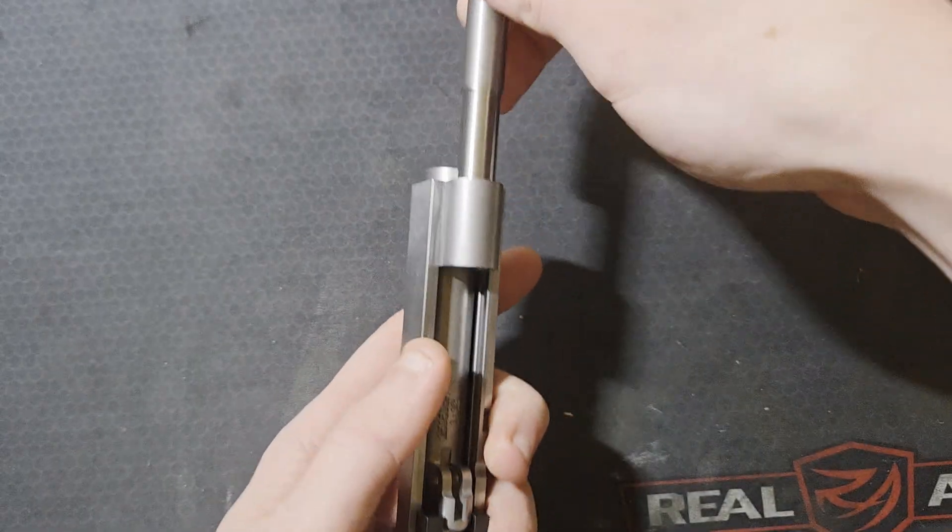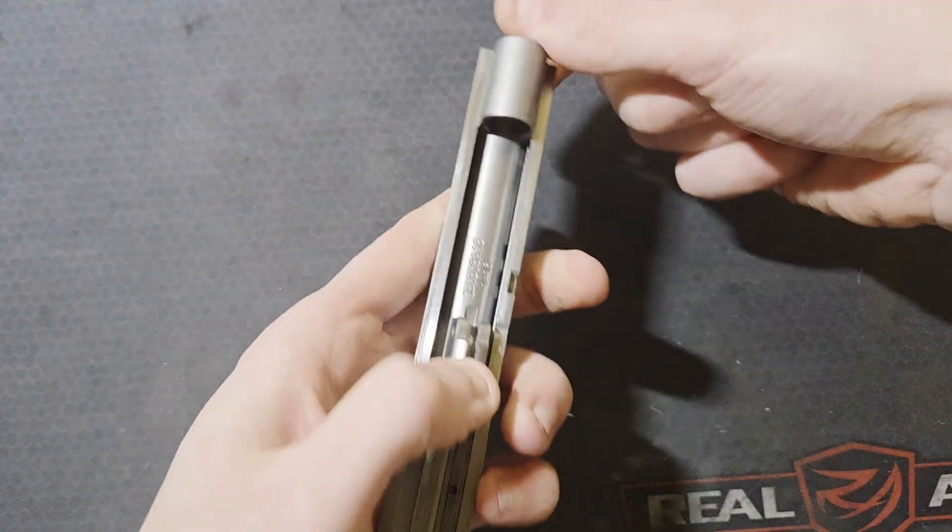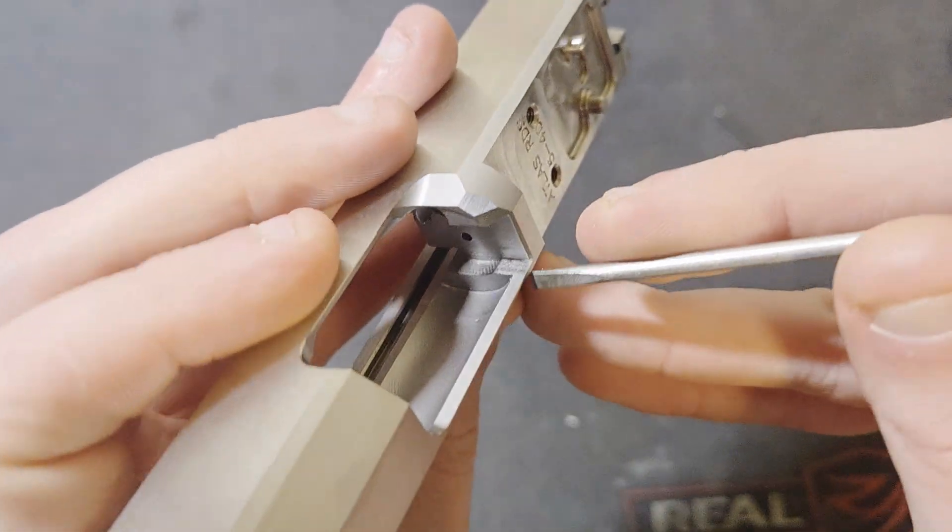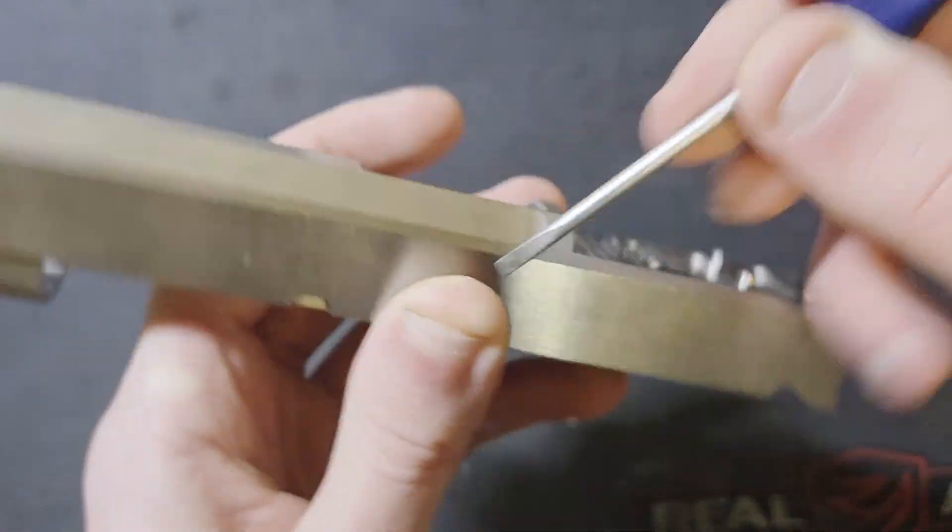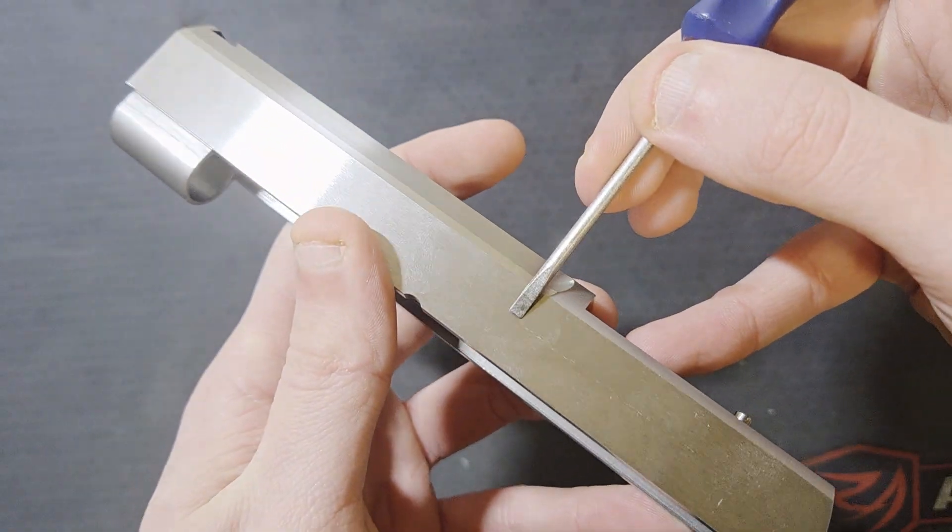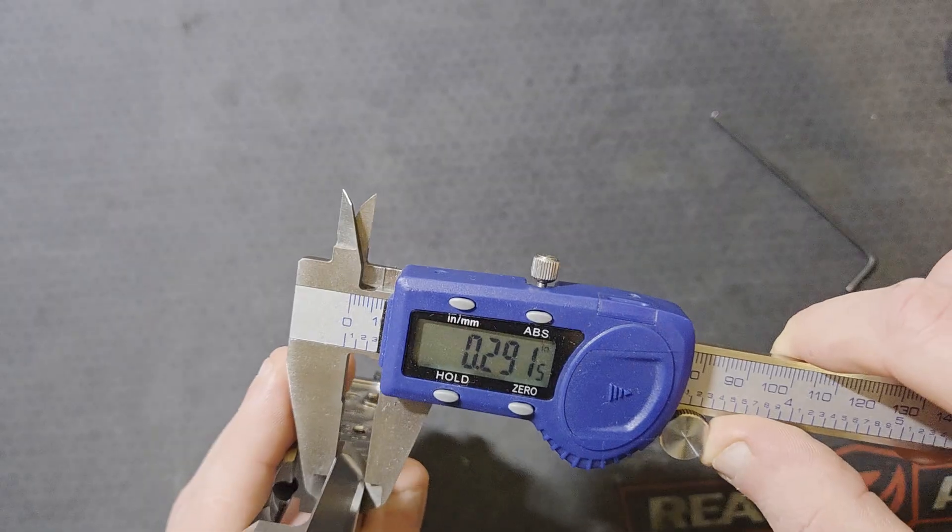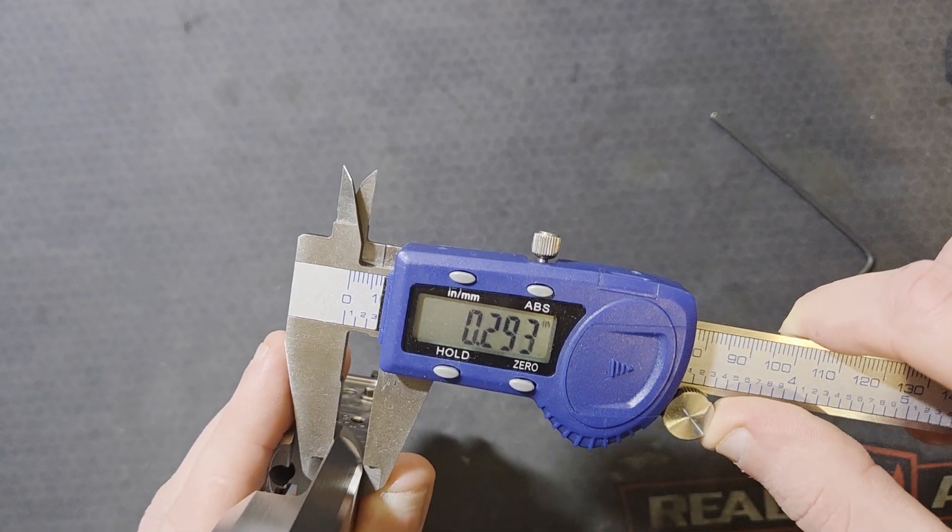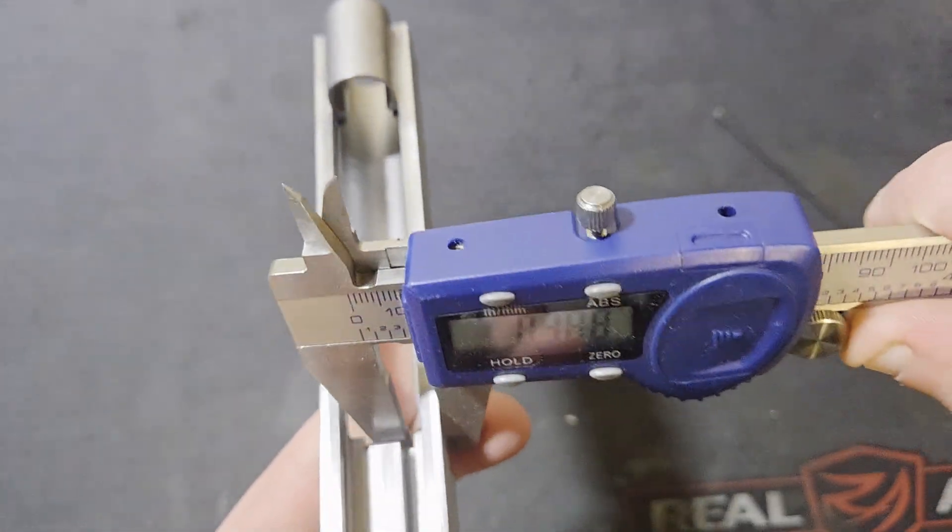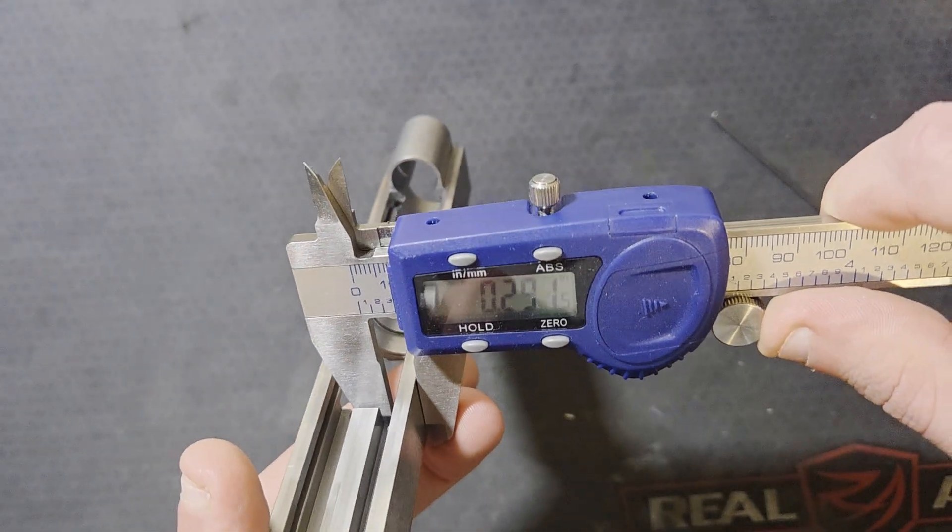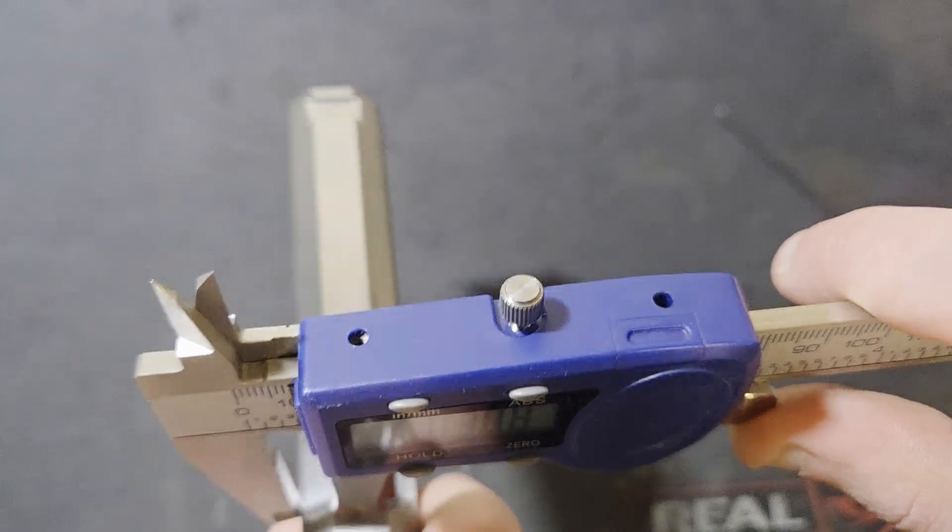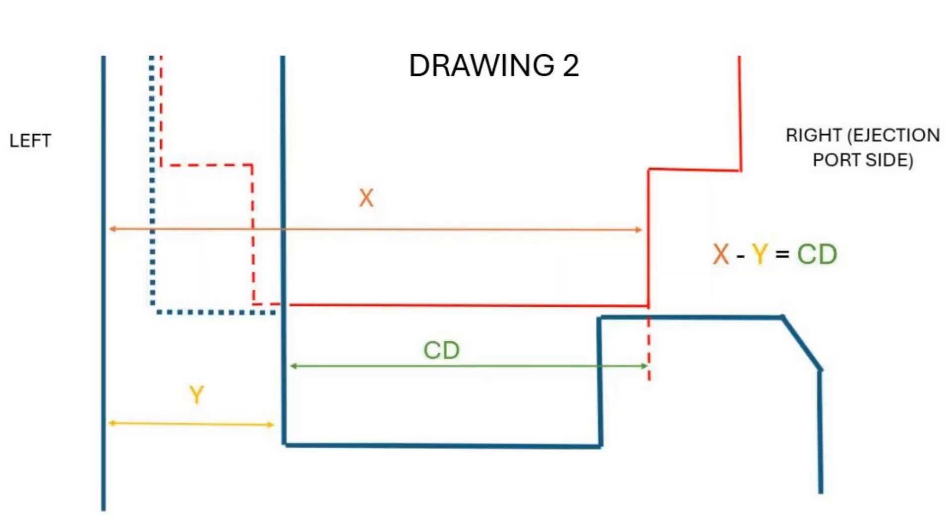I'm going to have to remove the barrel for this next measurement. I'm going to measure from this side of the breach face to this side of the slide. Once again make sure you're getting nice square contact with your jaws. You can measure this one a few different ways and make sure that all of the measurements agree.